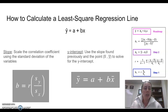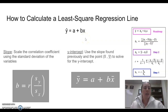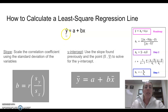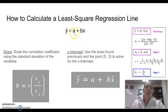In this particular equation, y-hat equals a plus bx. That y-hat stands for the predicted value, so we're predicting the value based on x, the explanatory variable. The a stands for the y-intercept, and the b stands for the slope.